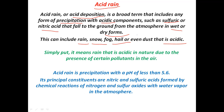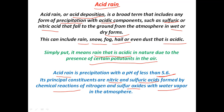In simpler terms, acid rain means rain that is acidic in nature due to the presence of certain pollutants in the air — specifically sulphur dioxide and nitrogen oxides. Acid rain is precipitation having a pH less than 5.6, and its principal constituents are nitric acid and sulphuric acid, which are formed by the chemical reaction of nitrogen and sulphur oxides with water vapour in the atmosphere.